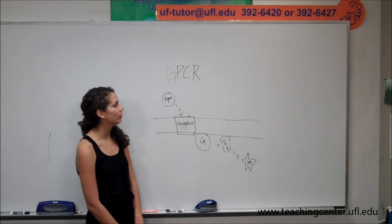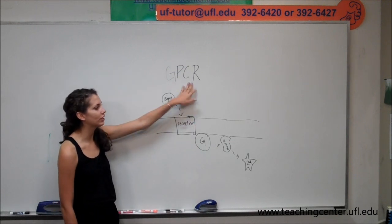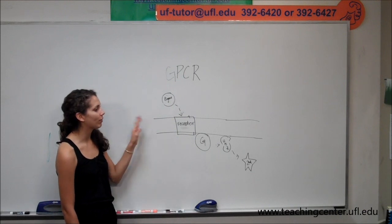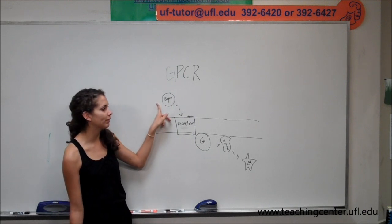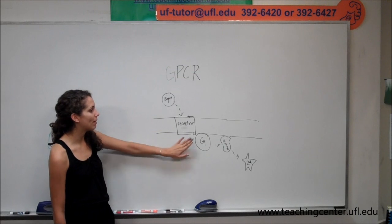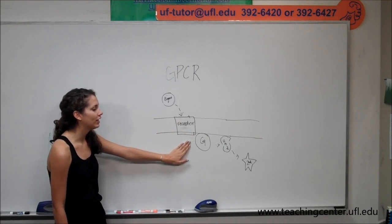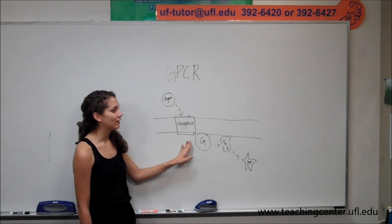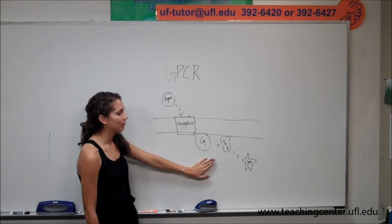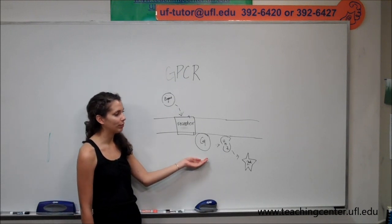In general, we call them G-protein coupled receptors. This signaling pathway involves an external ligand, for example epinephrine, binding to the membrane receptor. So with epinephrine, it would be a beta adrenergic receptor. This protein activates an intracellular GTP binding protein. We call these the G-proteins.